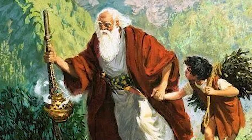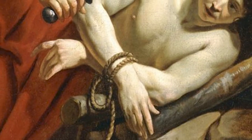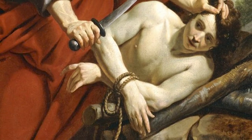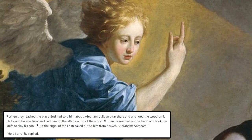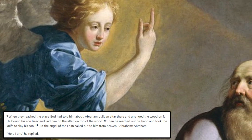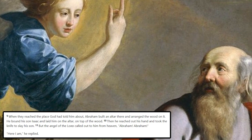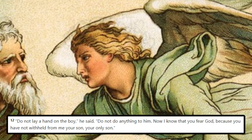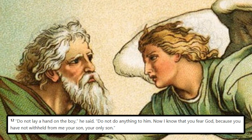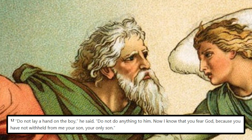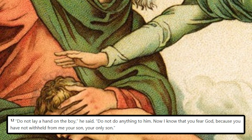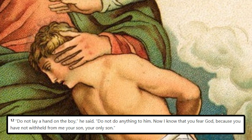Abraham built an altar and arranged the wood on it. He then bound Isaac and laid him on the altar. Abraham then took out his knife to kill Isaac. But then suddenly, an angel from God called out to him from heaven saying, 'Abraham, Abraham!' Abraham replied saying, 'Here I am.' The angel then says, 'Don't lay a hand on the boy. Do not do anything to him. Now I know that you fear God because you have not withheld from me your son, your only son.'